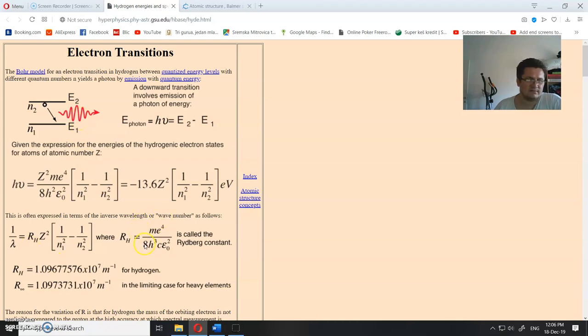This is that constant. As you can see, it consists of Planck constant, mass of electron, speed of light, and electric permeability of vacuum. This is the atomic number, I think, yes, and these two, as you can see, are lower and higher orbits.